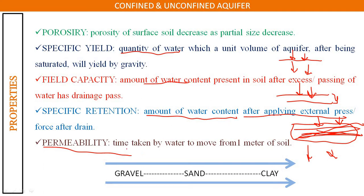Last is permeability. Permeability may be defined as the time taken by water to move through one meter of soil. Gravel has more permeability compared to sand, and sand has more permeability compared to clay.